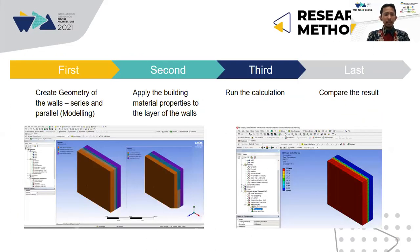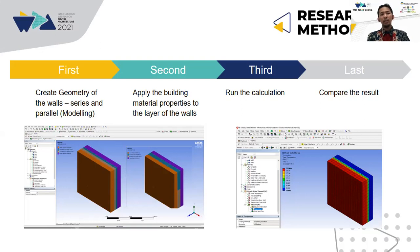As shown in the slide, there are several steps to be completed. First, we have to create the geometry of the walls in series and parallel configurations — this is called modeling. The next step is to apply the building material properties to the walls. I use four types of material with different thermal conductivity. Third, run the calculation, and then compare what happens with the parallel configuration versus the series configuration. The parallel and series configurations are applied in the middle layer of the insulation.